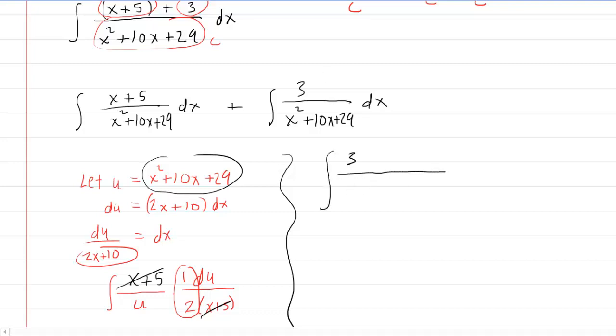Now to complete the square, we all recall that we take the coefficient of x, and we do two things to it, we divide it by 2 and then we square it. So if we take 10 and divide that by 2, we're going to get 5. And then we square that, we get 25. So 25 is a bit of a magic number here that we're going to be using. We'll have x squared plus 10x, then we'll put in that magic number plus 25, and then we have the plus 29. But when completing the square, if you add a 25 into the problem, you have to subtract a 25 as well. That will maintain an equivalent expression.